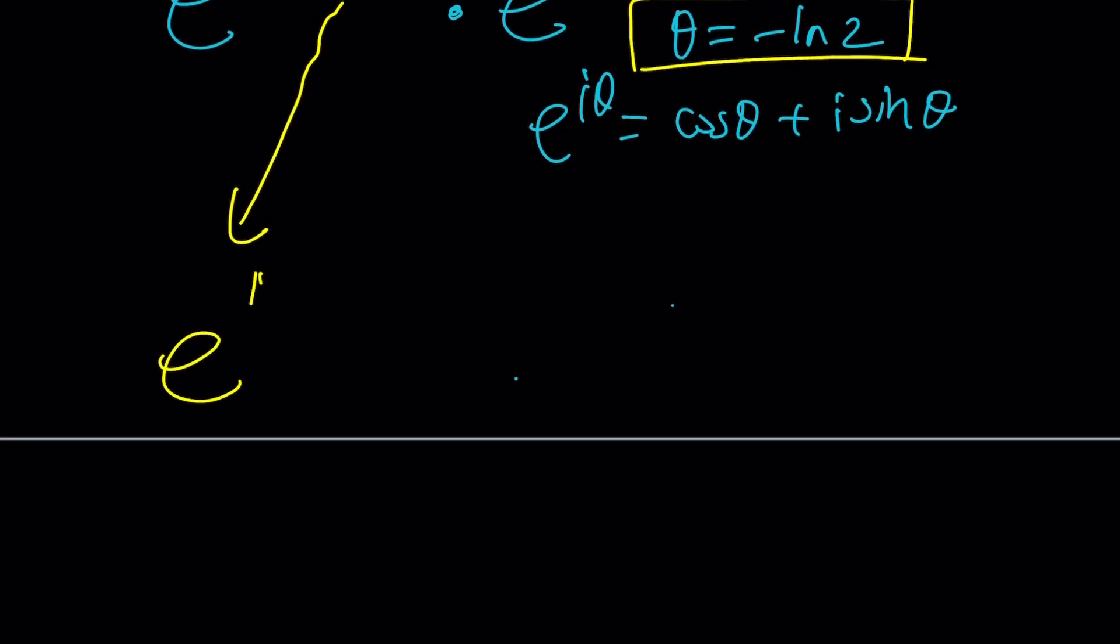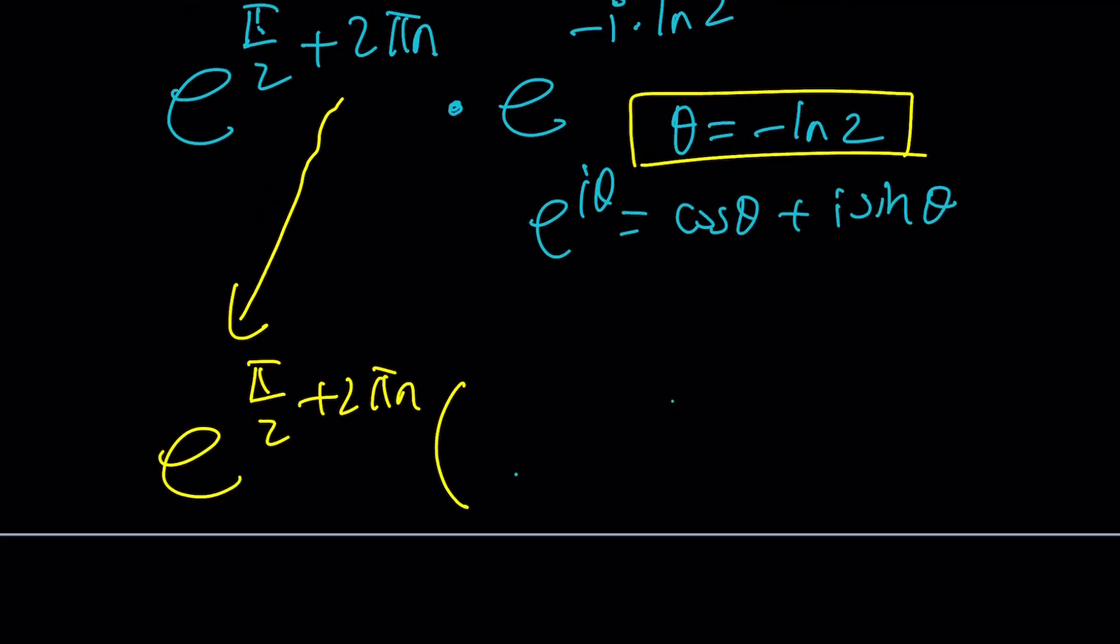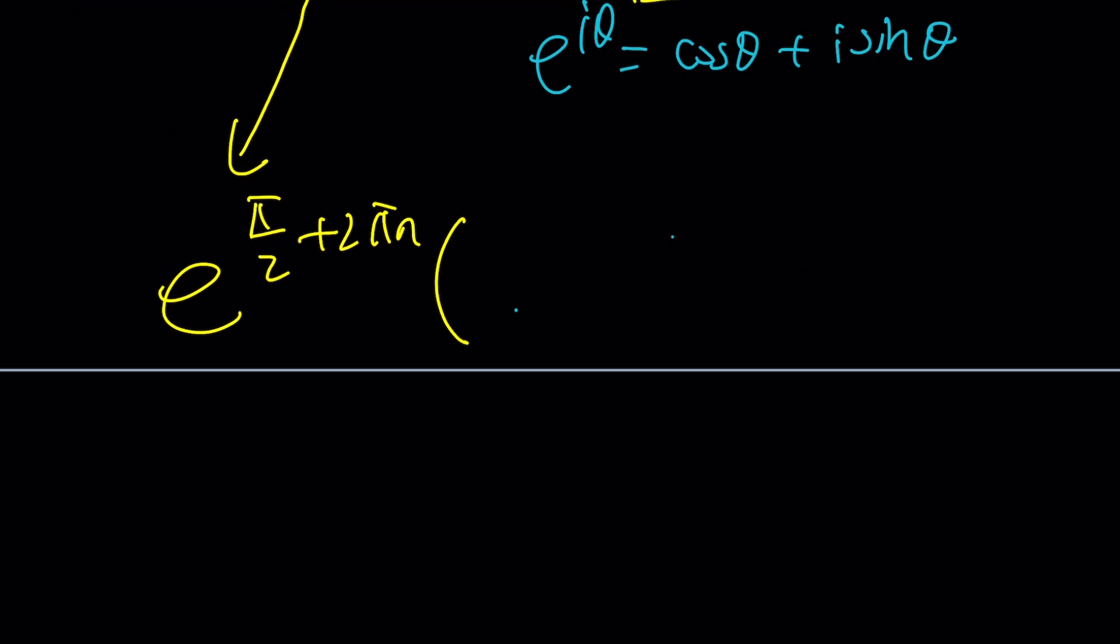So we're going to get E to the power pi over 2 plus 2 pi N multiplied by E to the power negative I LN2, which can be written as cosine of theta, which is in this case negative LN2, plus I times sine of negative LN2.